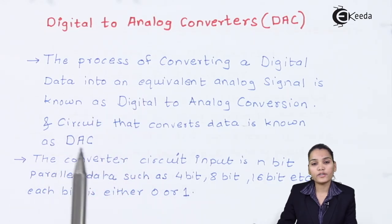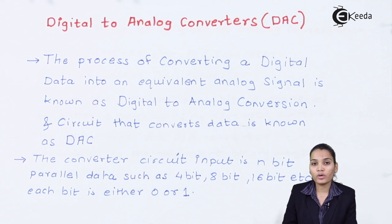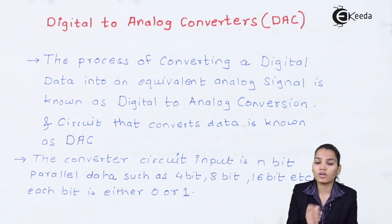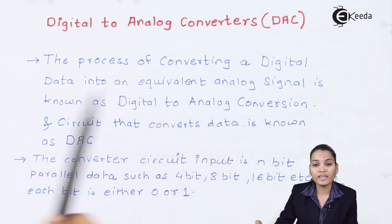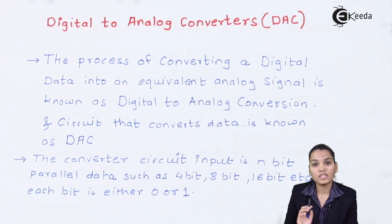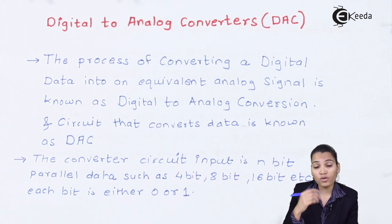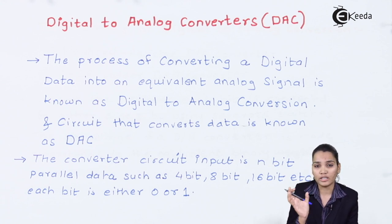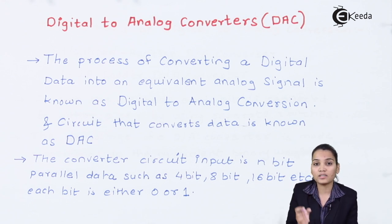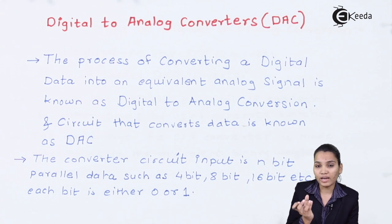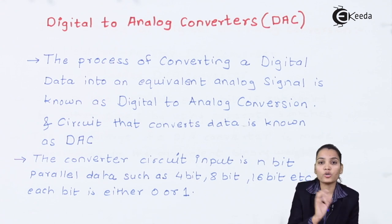We have seen what is the need of the ADC and the DAC. Today we are going to see what is the digital to analog converter. The process of converting digital data — which is in the form of 0 and 1 — into an analog signal is known as digital to analog conversion. The device which is used to convert digital data into analog form is known as the digital to analog converter.